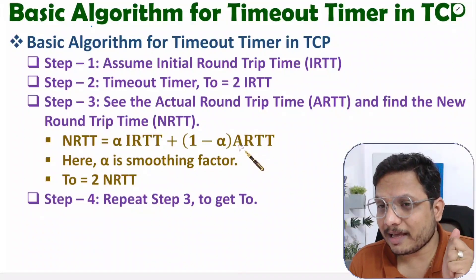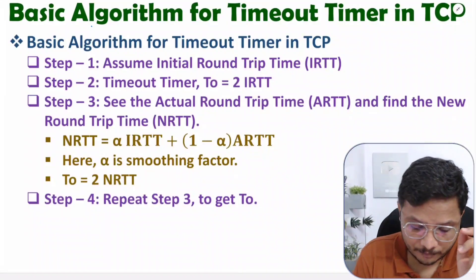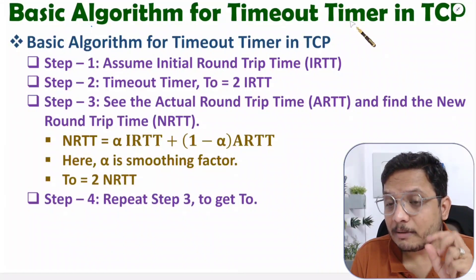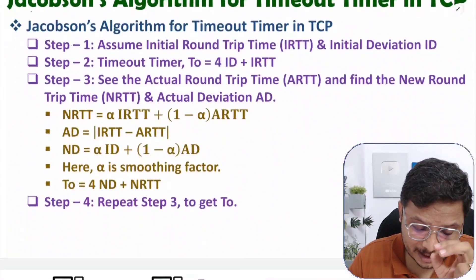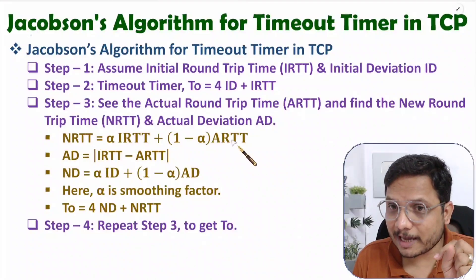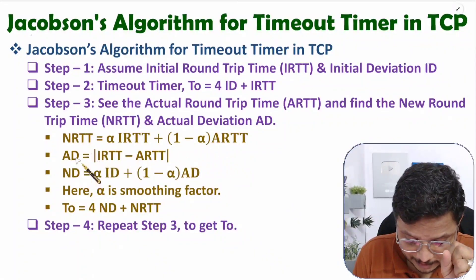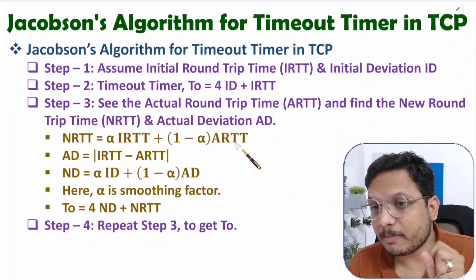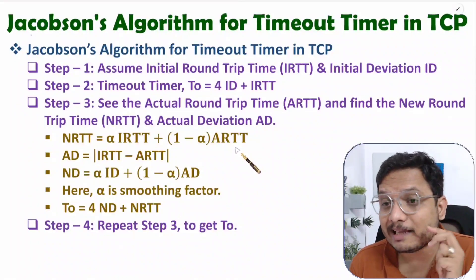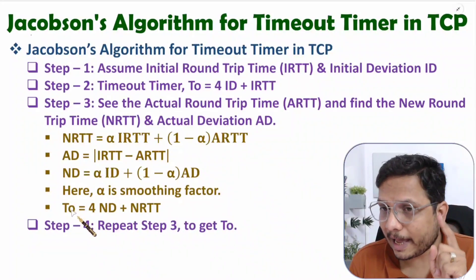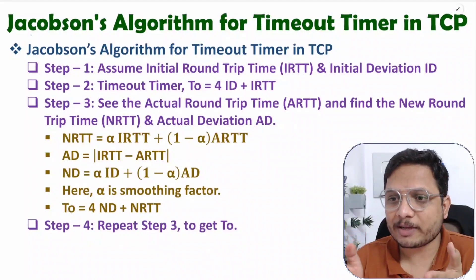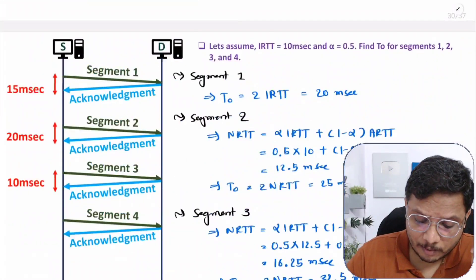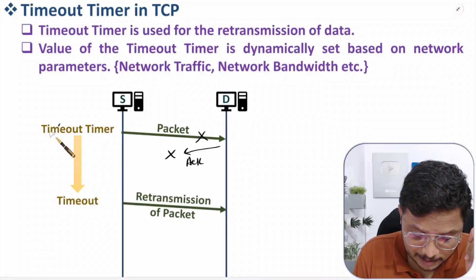T0 is dependent on NRT, and NRT is dependent on actual round trip time (ARTT). In the basic algorithm, T0 is based on actual round trip time. In Jacobson's algorithm, NRT is based on ARTT, and T0 is based on NRT — so indirectly T0 is based on ARTT. Dynamic calculation of T0 is therefore based on actual round trip time, and T0 is the timeout time period.